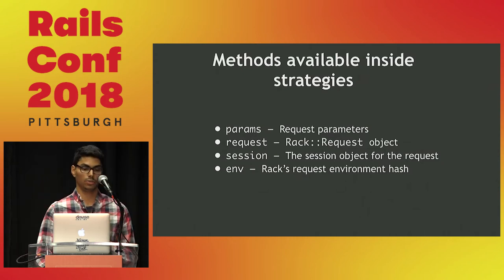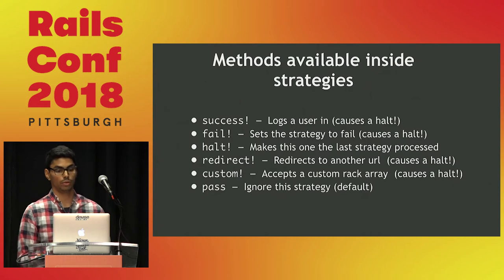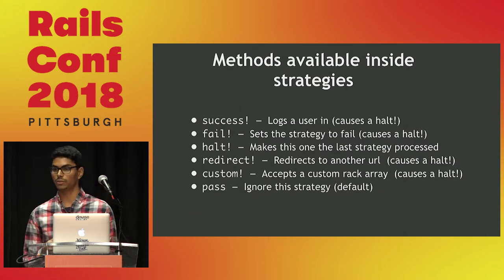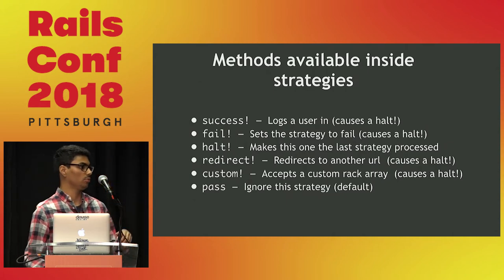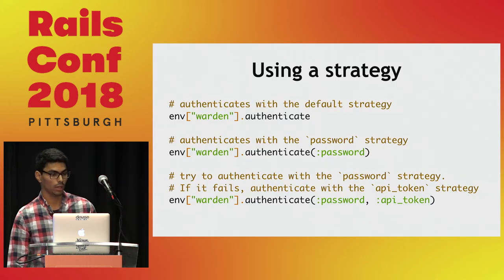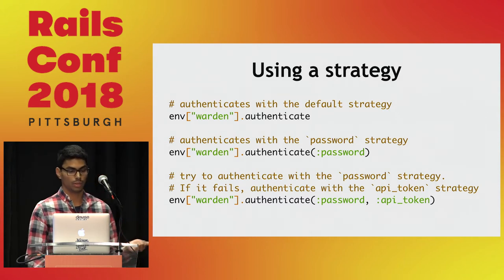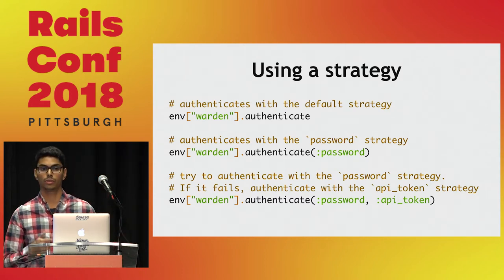Next we have authenticate, which is where we actually try to find the user. In our case we check if a user exists for both email and password. If it does, we call success and pass the user as an argument. If it doesn't, we call fail and pass an 'invalid email or password' message. We can also access the current request, the session, and the environment hash inside the strategy. Other available methods are halt, redirect, custom — which accepts a Rack array of status, headers, and body — and pass, which just ignores the strategy and is the default behavior.